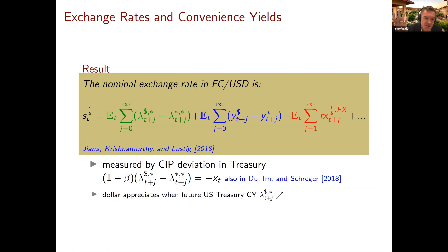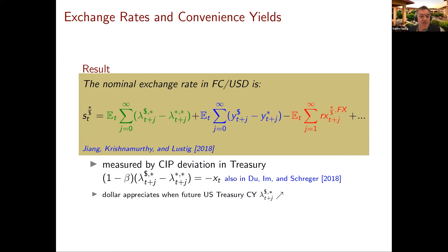We're now back where we started, but with this additional component reflecting deviations between convenience yields earned on Treasuries versus the foreign equivalent. Of course, this equation isn't helpful unless we have a way of measuring those convenience yields. This is where I lean on recent work by Wenjin and her co-authors, in particular Chessie, as well as work I've done with Zhangyang Zhang and Arvind Krishnamurthy. If investors earn differential convenience yields in Treasury markets, then CIP cannot hold — that's quite intuitive, because you're getting non-pecuniary benefits from holding U.S. Treasuries that you don't get from foreign bonds.